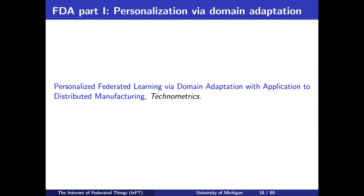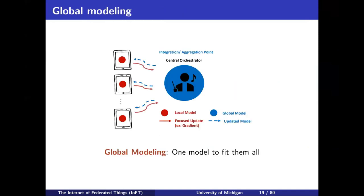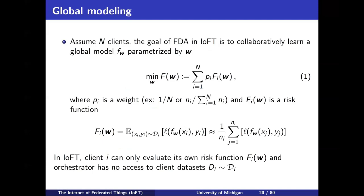Let me dive into some technical content. This is more on the machine learning part. The paper I will talk about is 'Personalized Federated Learning via Domain Adaptation with Application to Distributed Manufacturing.' This field of federated learning started from global modeling, where we try to learn one model that fits all — all clients collaborate to learn one big model. Assuming we have n clients and are trying to learn some model f(w) parameterized by w — this model can be a neural network, linear regression, anything — our objective is to minimize the empirical or average risk over all clients, where pi_i is some weight for each client.